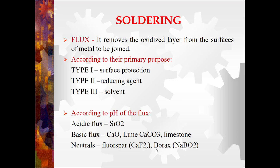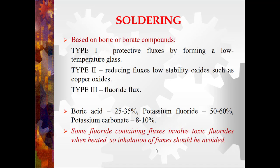Classification of fluxes: first, according to primary purpose — Type 1: surface protection, Type 2: reducing agent, Type 3: solvent. According to pH of the flux: acidic flux such as silicon dioxide; basic flux such as calcium oxide and lime (calcium carbonate or limestone); neutrals such as fluorspar and borate. Based on borate compounds: Type 1 protective fluxes forming a low-temperature glass; Type 2 reducing fluxes for low-stability oxides such as copper oxide; Type 3 fluoride flux with composition of boric acid 25–35%, potassium fluoride 50–60%, potassium carbonate 8–10%. Some fluoride-containing fluxes involve toxic fluoride when heated, so inhalation of fumes should be avoided.